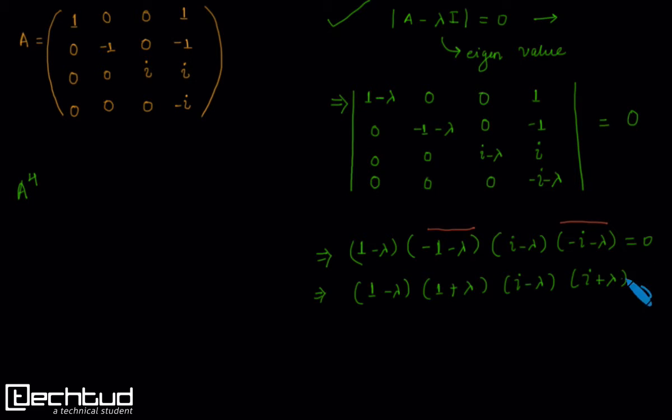Finally we obtain this equation which can be further reduced. The two terms over here are in the form of a plus b into a minus b, which equals a square minus b square. This will result in 1 minus lambda square, and this will result in minus 1 minus lambda square.